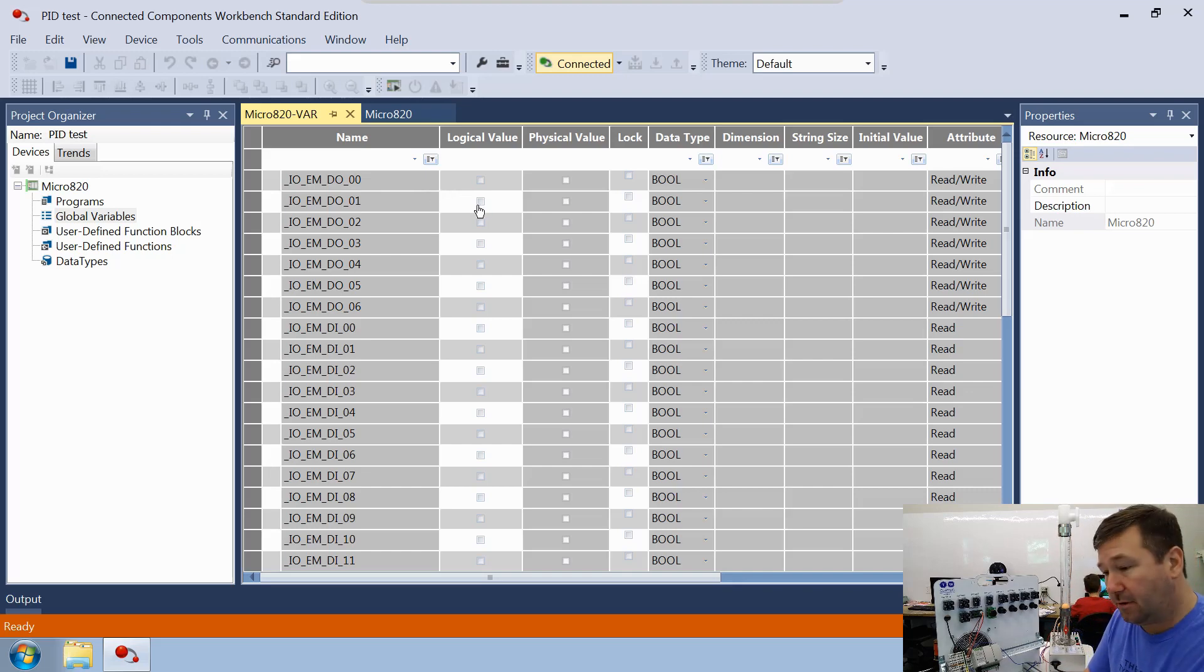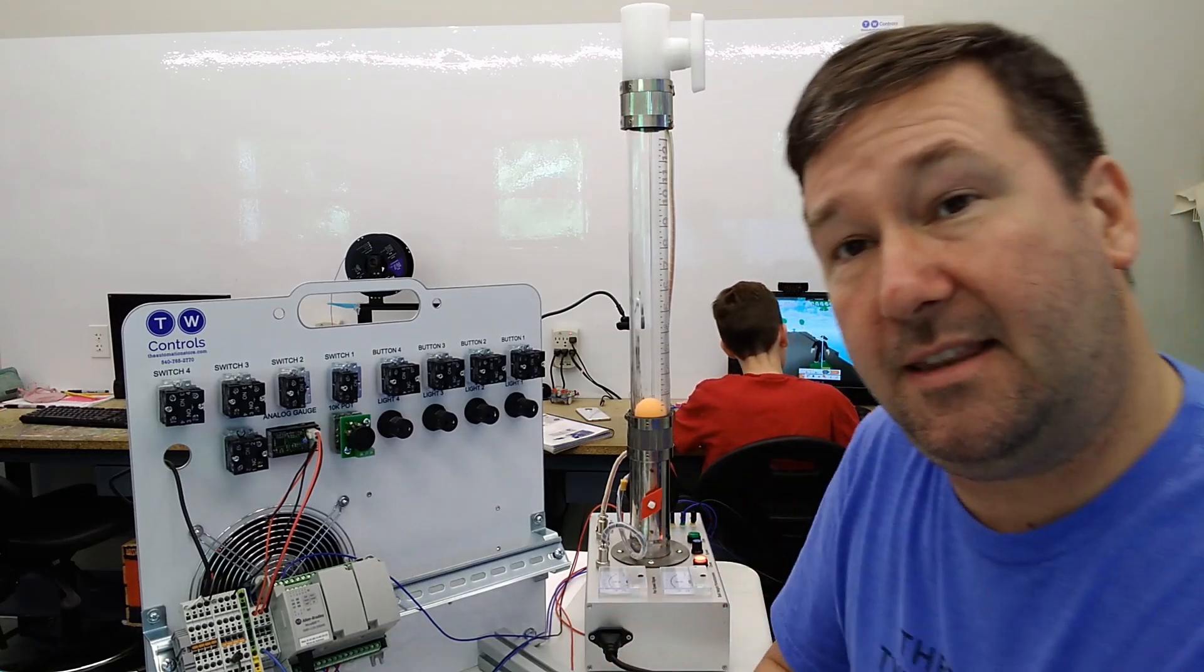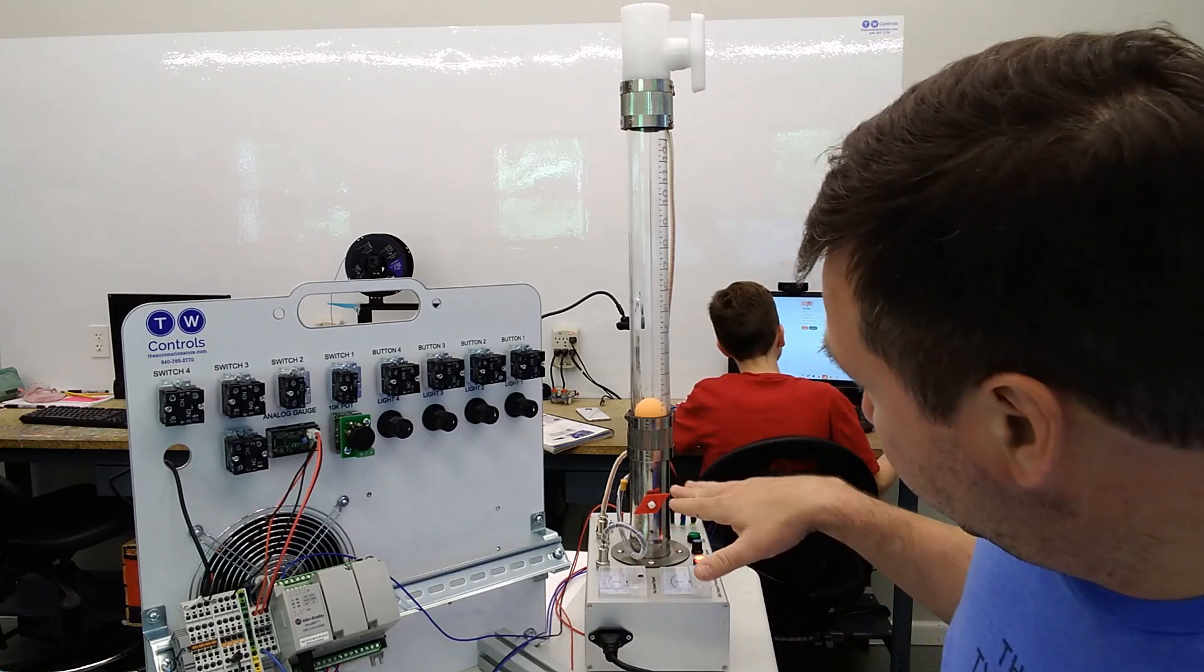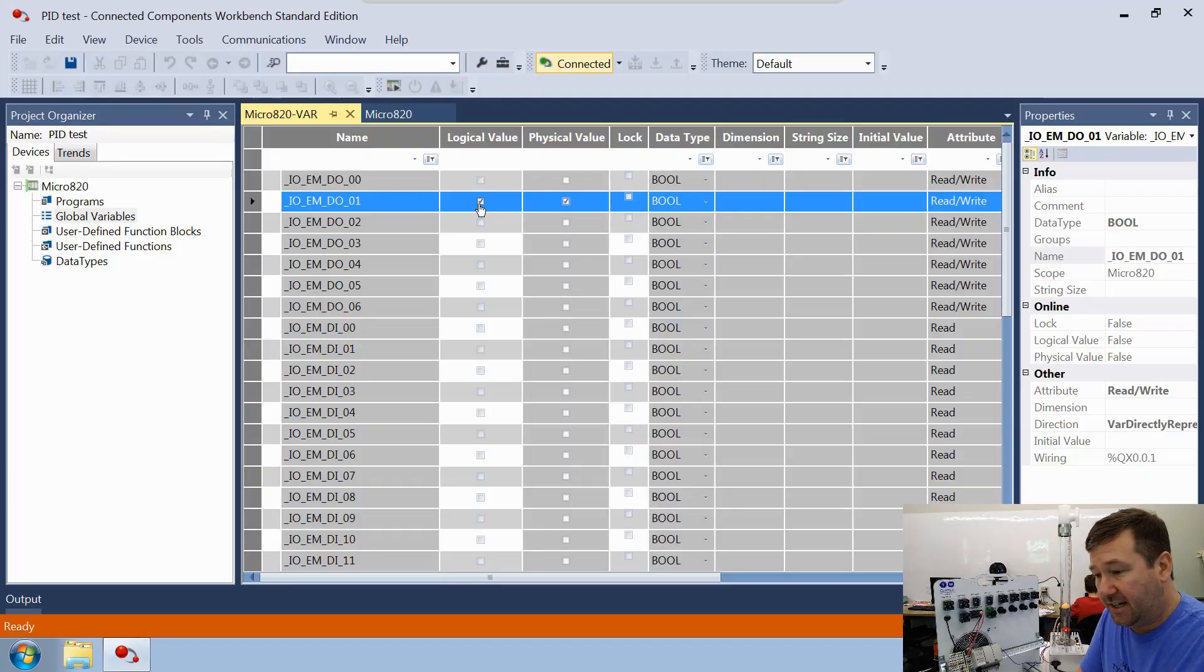Number one should be our damper closed. So if we go ahead and check the logical value box, then yes, we can see that our damper is coming around to a close.